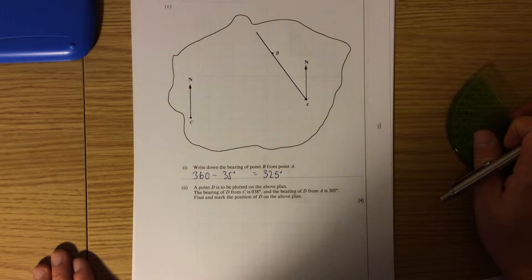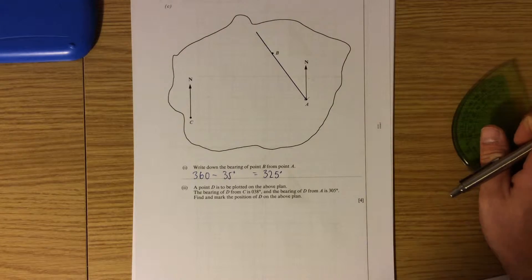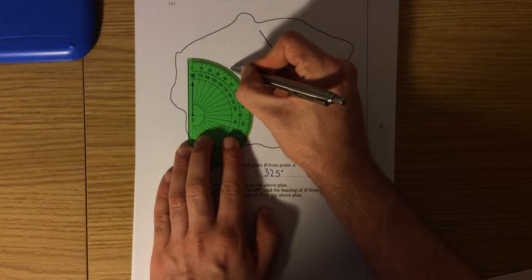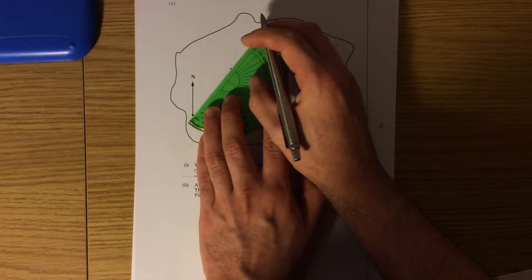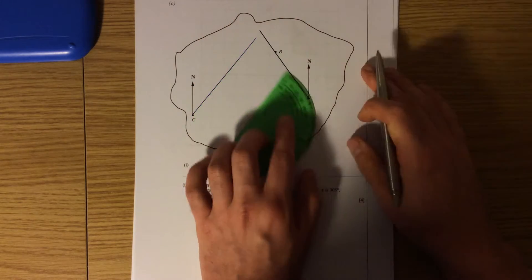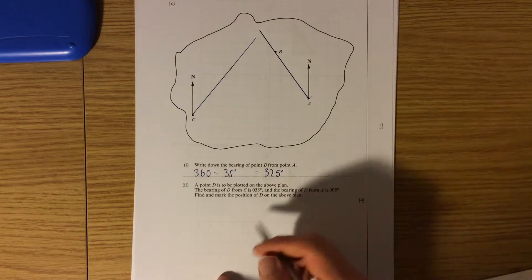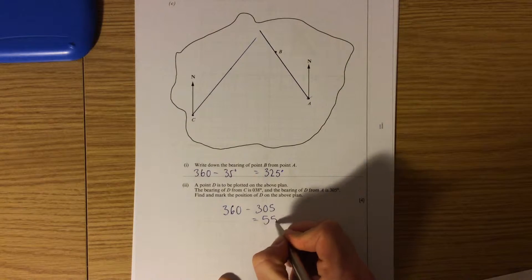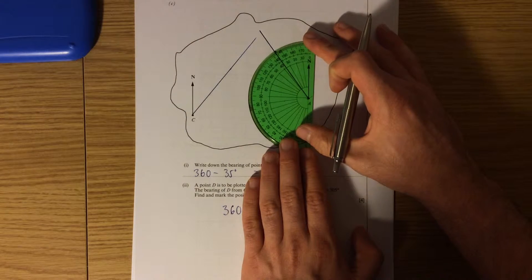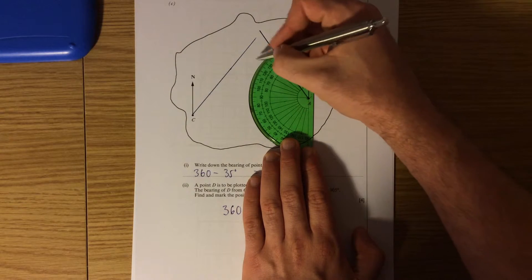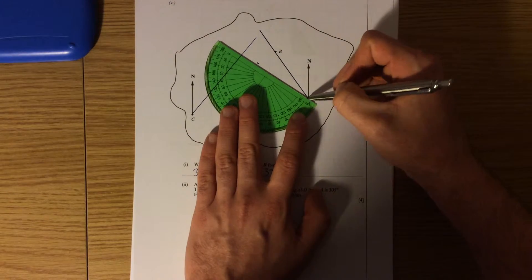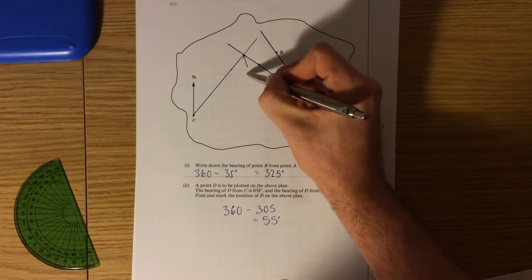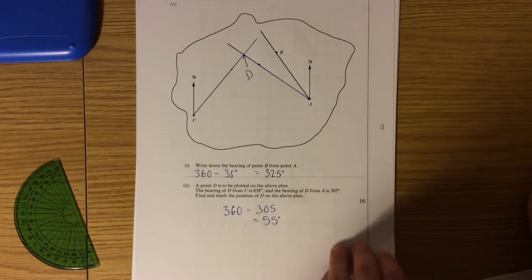Part II, a point D is to be plotted on the bear plan. The bearing of D from C is 38 and from A is 305. So from C the bearing is 38. So I'm going to work around 38, mark it and I'm going to draw a line through that point. Again I'm going to extend it a bit further because it doesn't matter. From A it is 305. Again I'm going to use the fact that to find where I'm going to draw that, I'm going to do 360 minus 305 which gives me 55 degrees. And I'm going to draw the angle in reverse. So 55 degrees from here, and I'm going to again extend that line. Now the only place where D can be is where these two lines meet, because at that exact point I am on both the bearings we've just drawn.